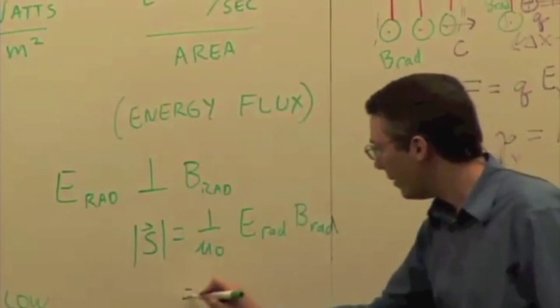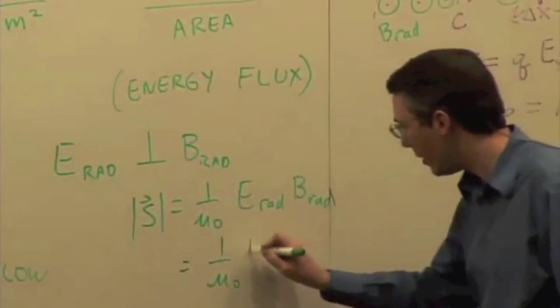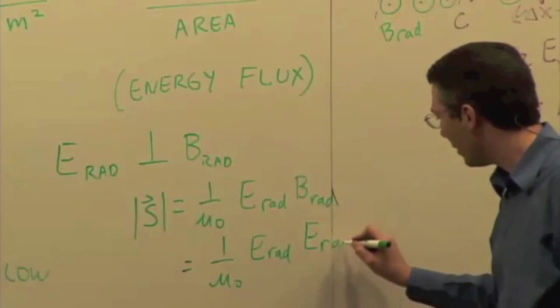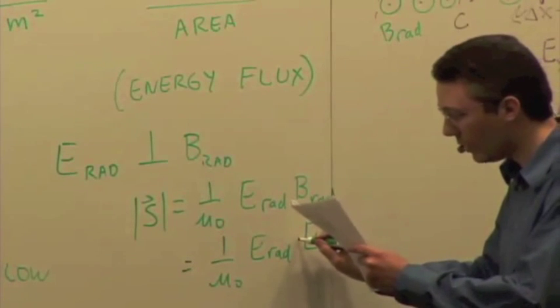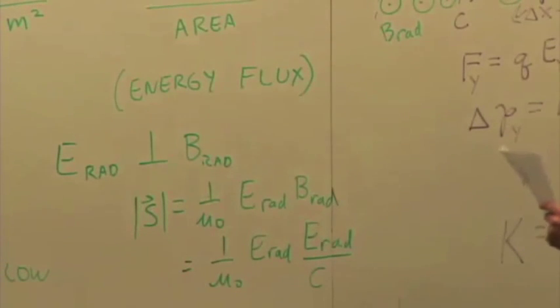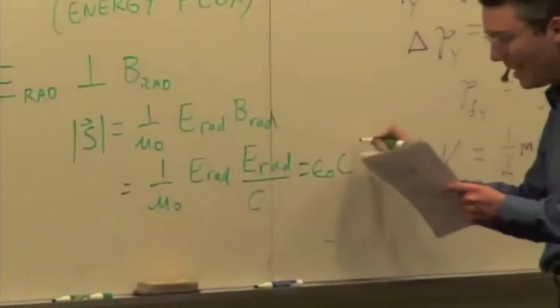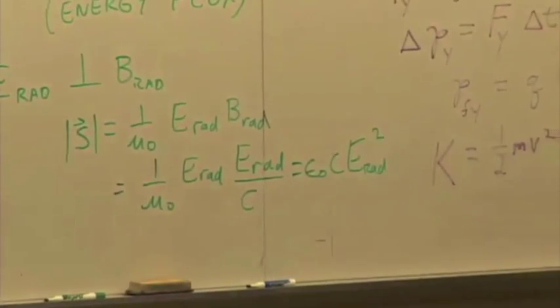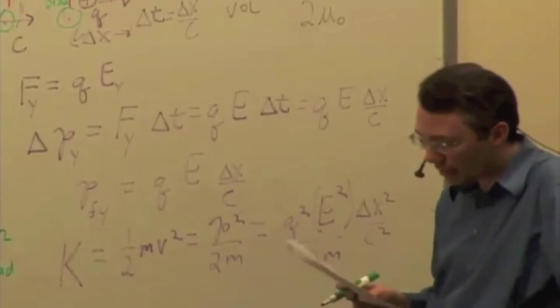So it works out for radiation that we have 1 over mu naught E rad just times B rad. And once again, because B rad is E over C, we could just write this out as E rad times E rad over C. E over C, that's right. And so when you work it all out, you get all the constants, this works out to be epsilon naught C times E rad squared. So once again, energy flow proportional to the square of the magnitude of the field.